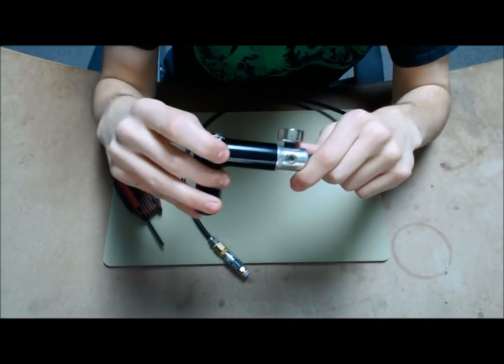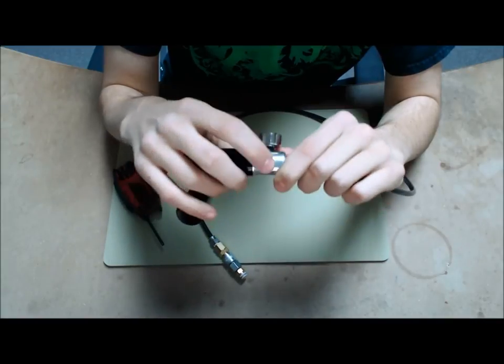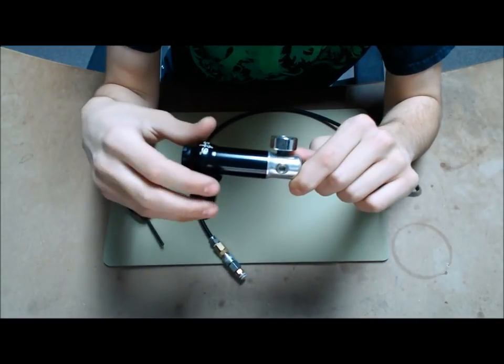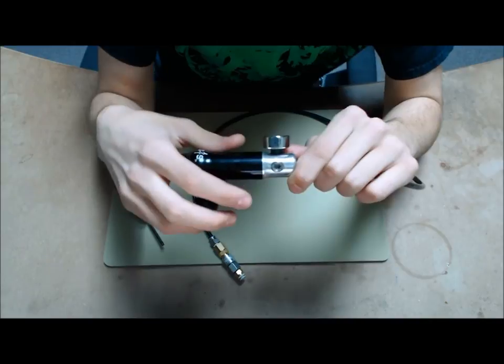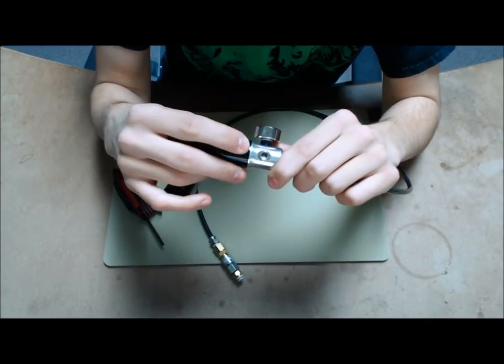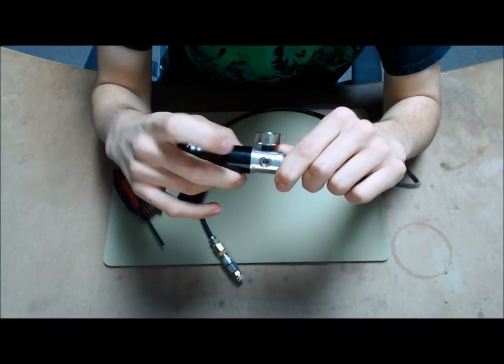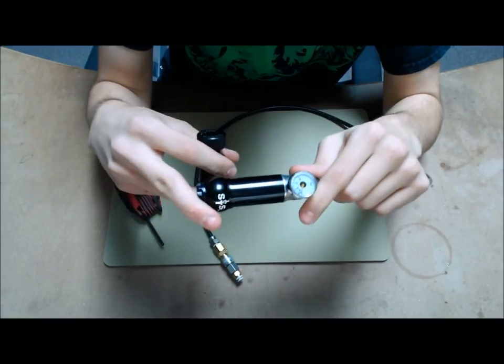45 degrees around the base of the regulator from the gauge itself, there is another port there that we just have an Allen key screwed in there for a seal. You can use that in place for like a blow-off valve of some sort, but with the air rig that does not come standard. We just throw a screw in there as a seal.